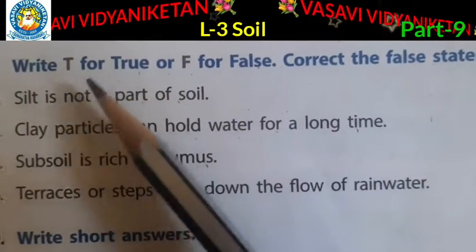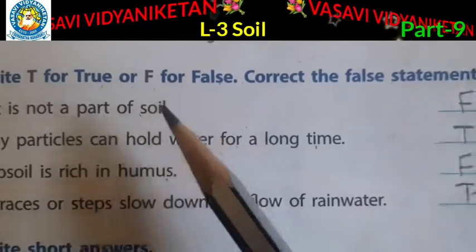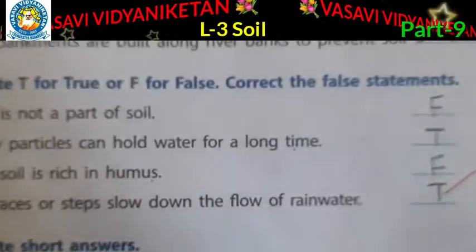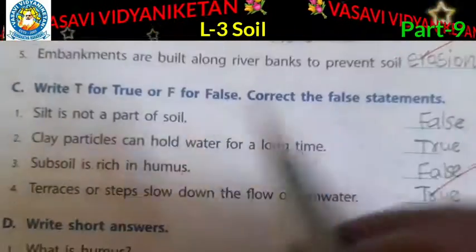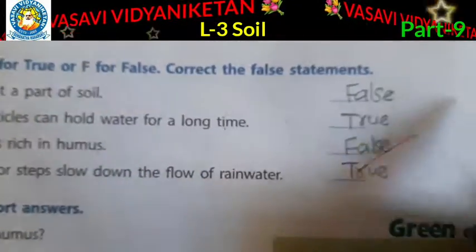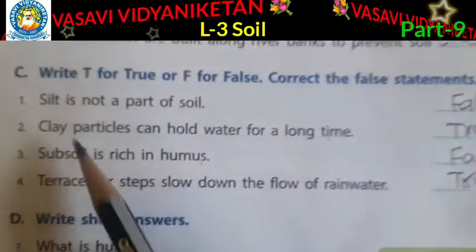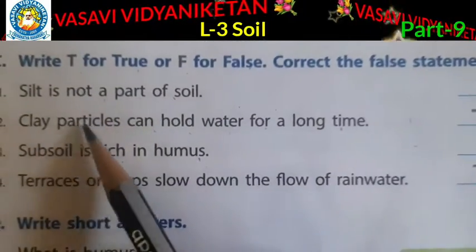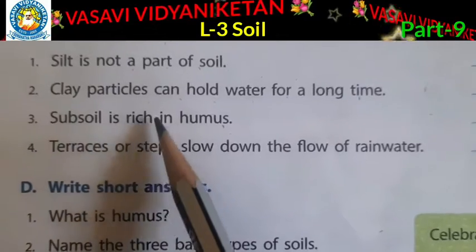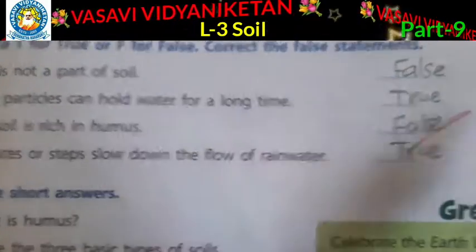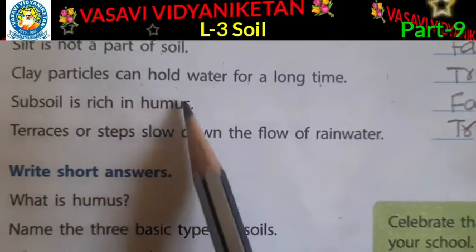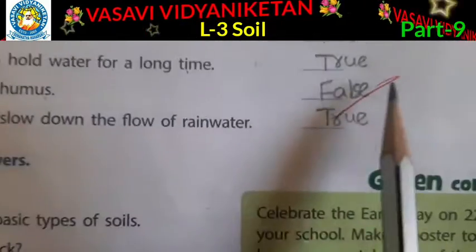Section C: Write T for true or F for false, and correct the false statements. First one: Silt is not a part of soil — False. F-A-L-S-E. Silt is not a part of soil — False. Second one: Clay particles can hold water for a long time — True.